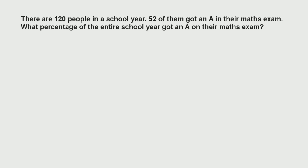So the first example: there are 120 people in a school year, 52 of them got an A in their maths exam. What percentage of the entire school year got an A on their maths exam? The first thing we need to identify is what we consider the 100% to be. A percentage is a part out of 100, so the total number of people — the 120 people — is equivalent to 100%.